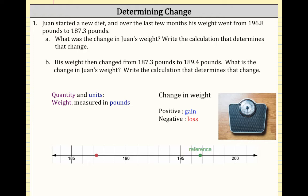The red dot represents the most current value or exactly where we stopped. Using REF as a shortening of reference, from the reference point of 196.8 pounds there's a change in weight to 187.3 pounds. That is a decrease — that is a negative change.